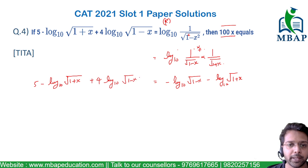Now comparing right-hand side versus left-hand side, I can see log₁₀√(1+x) will get cancelled.